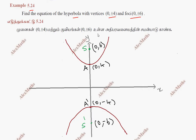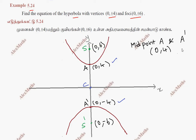Now we are going to find the center. We are going to use the midpoint formula. The midpoint of A and A' — A is (0, 4) and A' is (0, -4).